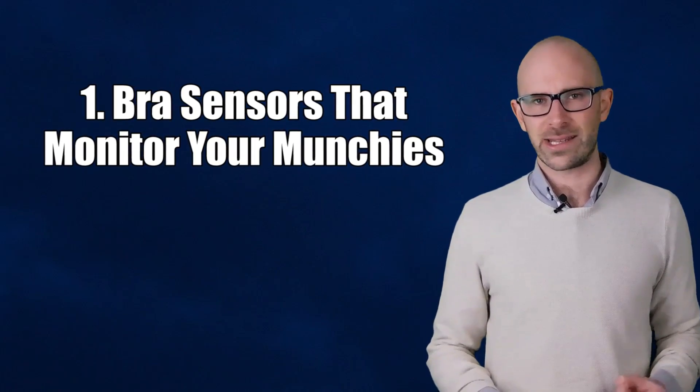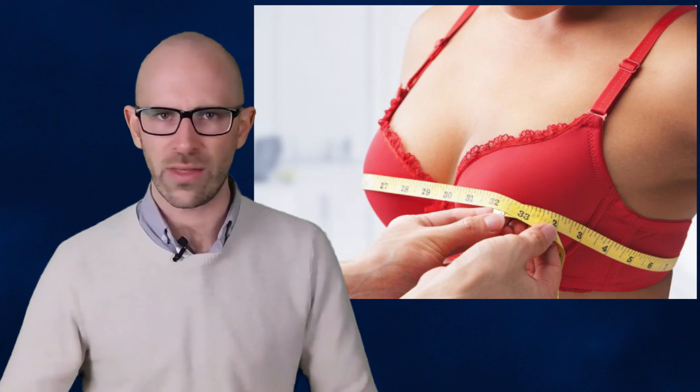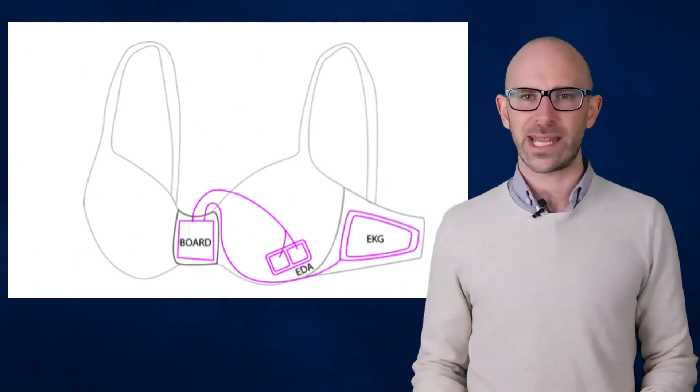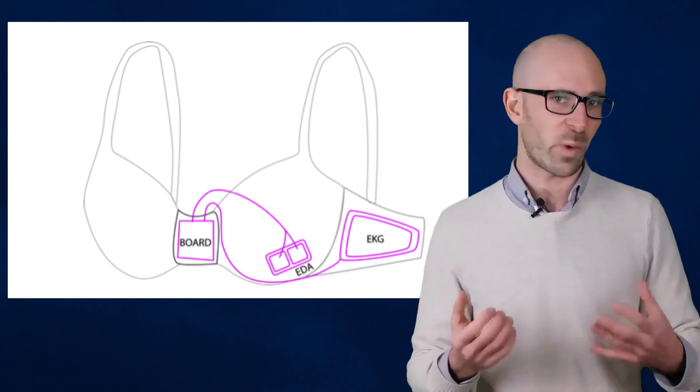Number 1. Bra Sensors That Monitor Your Munchies. Dealing with growing obesity is a lucrative market and can lead to some very offbeat technologies. Microsoft Research has recently created a special bra that, when combined with a smartphone app, can prevent you from overeating. It works by using a series of sensors embedded in the pad and measure the heart activity of the woman who is wearing it.